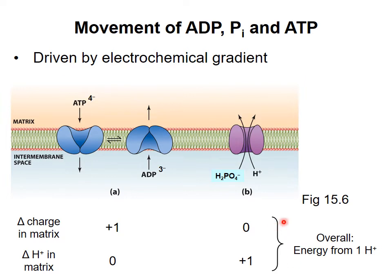Taken together, then, the movement of an ATP out of the matrix and an ADP and a phosphate into the matrix uses the energy equivalent of one proton that had been pumped out of the matrix by the electron transport chain.